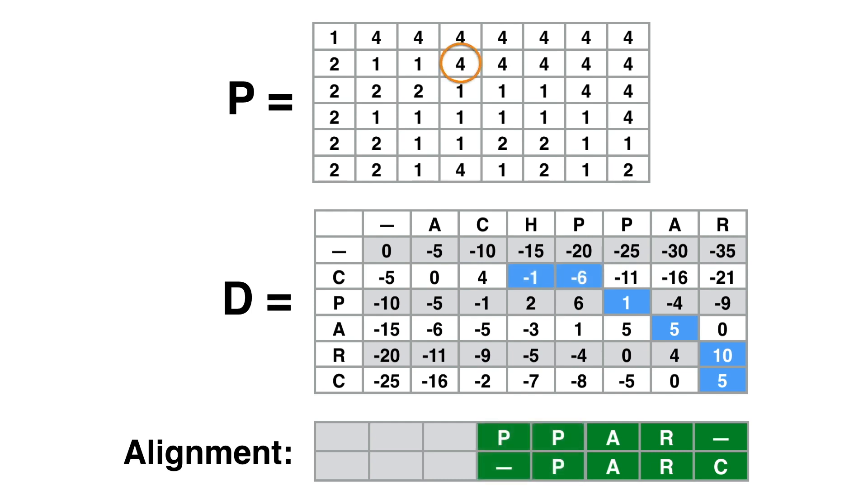Thus, we move one cell to the left and align P with a gap symbol. Our current position in D is (1,3). Position (1,3) holds a 4, so we move again one cell to the left and align H with a gap symbol. Our new position in D is (1,2). We look up the entry (1,2) in P. We are about to finish. Since position (1,2) holds a 1, we move to the next cell across the diagonal and align C with C. This takes us to position (0,1) in P. And since the entry in position (0,1) in P is 4, we move one cell to the left and align A with a gap symbol.